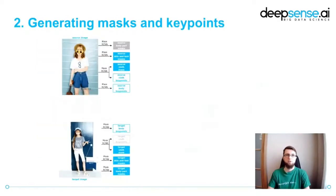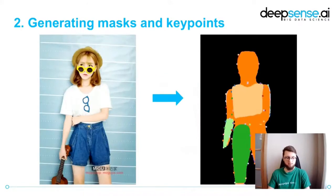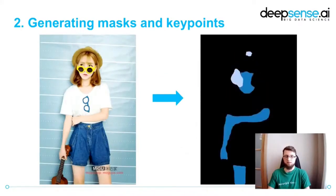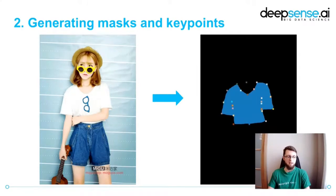Step two: generating masks and keypoints. For further processing, we had to extract body part masks, body keypoints, skin and hair masks, and cloth masks and keypoints from the pictures. We did this using four fine-tuned instances of the Mask RCNN model.